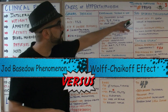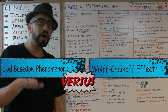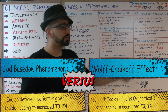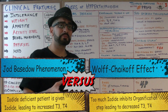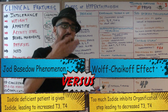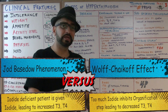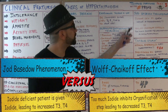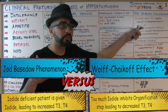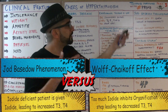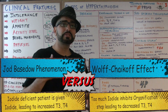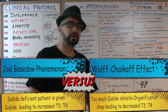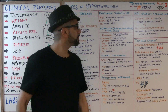The Jod-Basedow phenomenon is the opposite of the Wolff-Chaikoff effect. In the Wolff-Chaikoff effect, too much iodine dumped into the thyroid follicular cell inhibits the organification step, causing hypothyroidism. In the Jod-Basedow phenomenon, a previously iodine-deficient patient is given sufficient iodine, and this leads to a state of thyrotoxicosis.